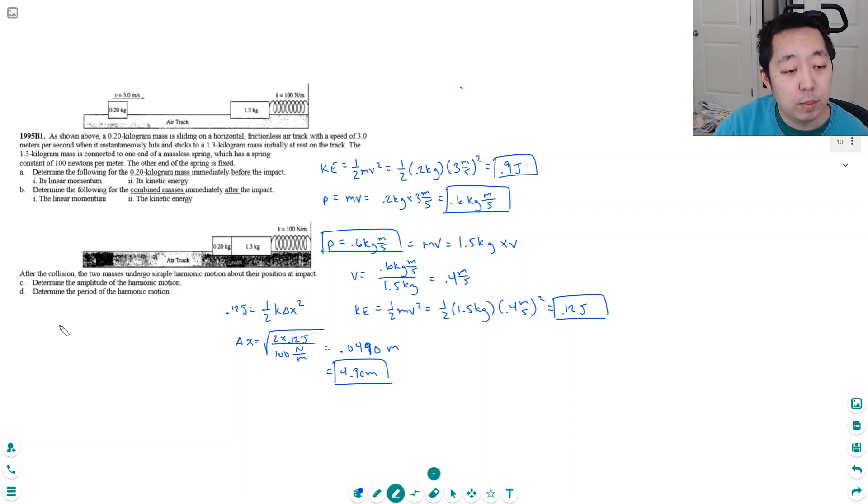Determine the period of the harmonic motion. The period is given by this equation 2 pi square root of m over k and I know all of these. 2 pi square root, the mass is 1.5 kilograms, remember it's the combined mass, and the spring constant is 100 newtons per meter. So 2 pi square root of 1.5 divided by 100. I got 0.77 seconds.